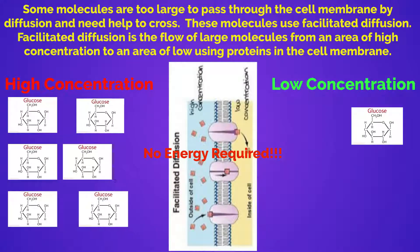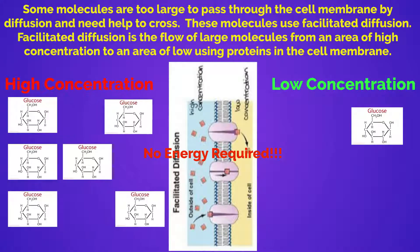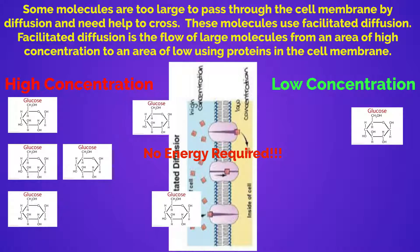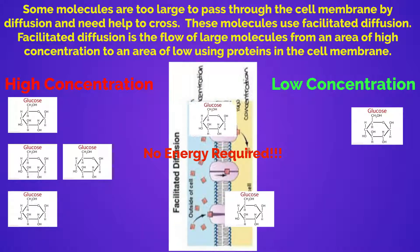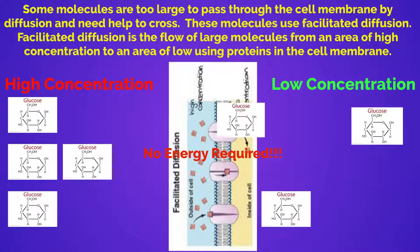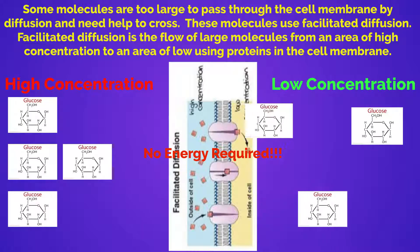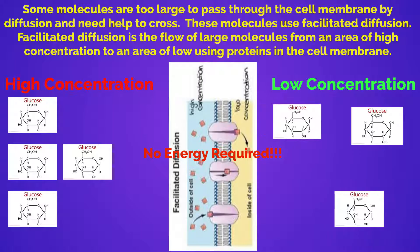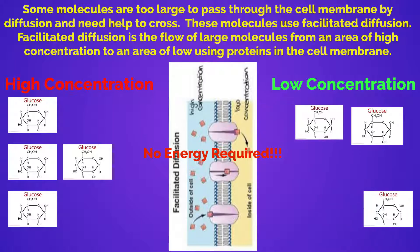Some molecules are too large to pass through the cell membrane by diffusion and need help to cross. These molecules use facilitated diffusion. Facilitated diffusion is the flow of large molecules from an area of high concentration to an area of low concentration using the proteins in the cell membrane.